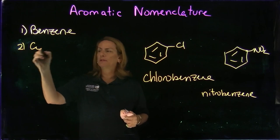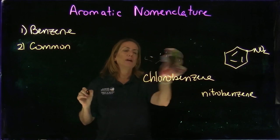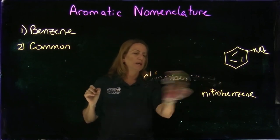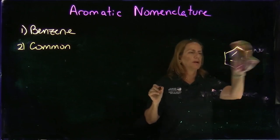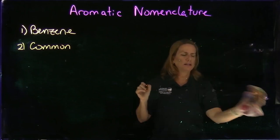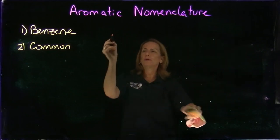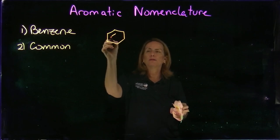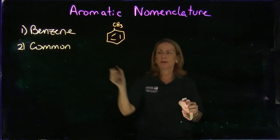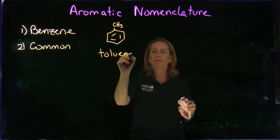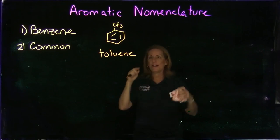Number two: common names. This is where it gets a little trickier. There are quite a lot of common names, but there are six or so that are commonly used that you'll see a lot in the next two chapters. First of all, if we have a methyl group directly attached to the benzene on any carbon, that is known as toluene.